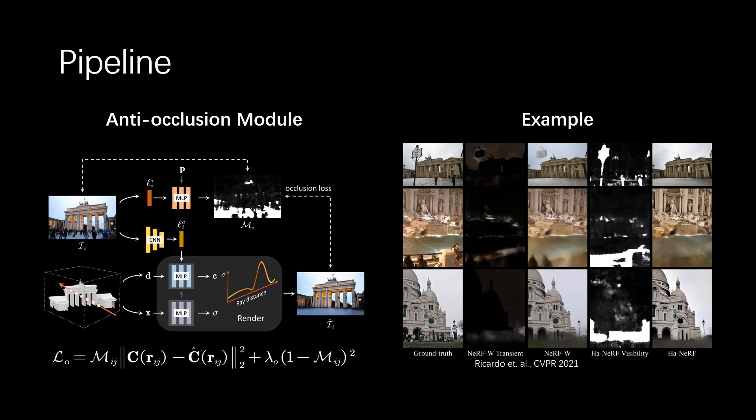We introduce an anti-occlusion module to separate the static scene by using an image-dependent 2D visibility map. We train the map in an unsupervised manner with an occlusion loss, where the first term is the reconstruction error considering pixel visibility, and the second term discourages the model from turning a blind eye to static phenomena.